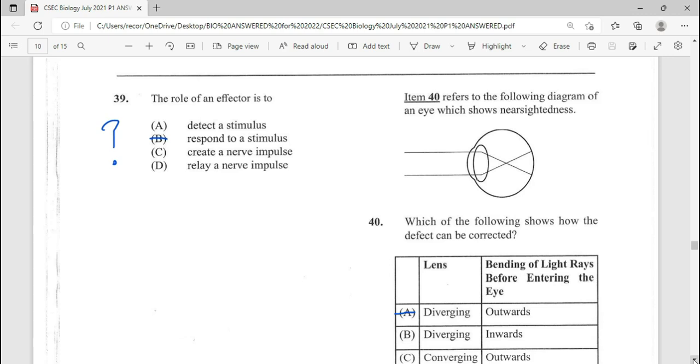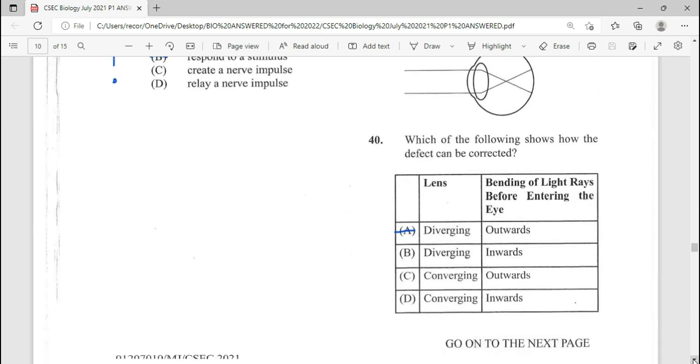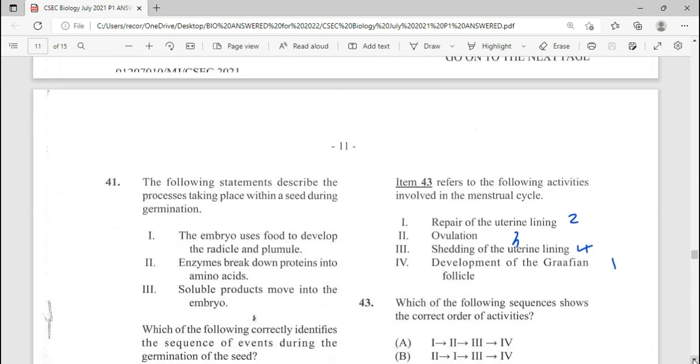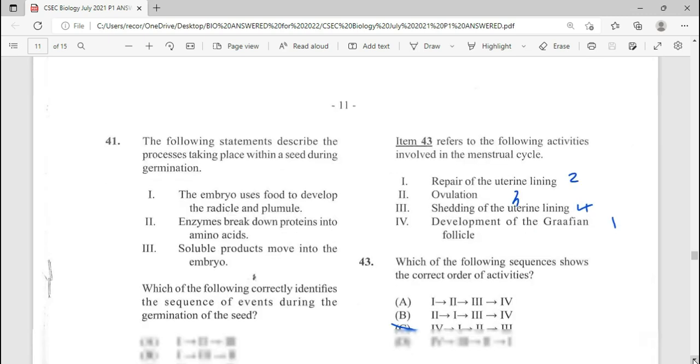39, the role of effector is to respond to the stimulus. B being our answer for 39. 40, repeated question. Which of the following shows how the defect can be corrected? The defect here, item 40 refers to the following diagram of the eye, which shows near-sightedness. So we're going to be using a diverging lens, which means that the light is going to be opening.